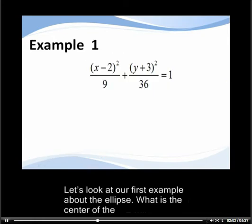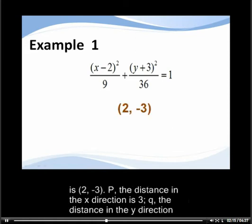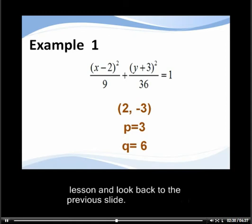Let's look at our first example. About the ellipse, what is the center of the ellipse shown? What is p? What is q? And what would a sketch look like? The center is (2, -3). p, the distance in the x direction, is 3. q, the distance in the y direction from the center, is 6. If you are not sure how I got these values, please stop this lesson and look back to the previous slide.